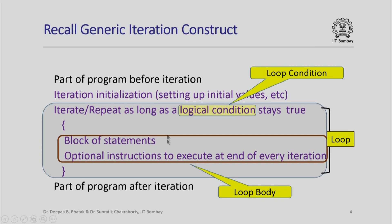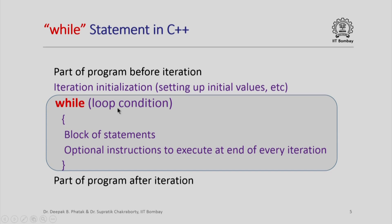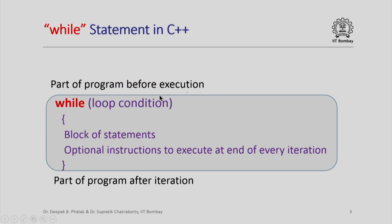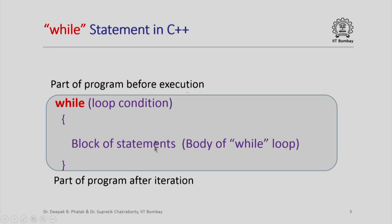In C++ we can implement this using the while construct as follows: while (loop condition) { block of statements }. The optional instructions to be executed at the end of every iteration can be grouped with this block of statements, and the initialization part can be grouped with the part of the program before the iteration. So we have a part of the program before the loop, the while loop body, and then the part of the program after the while loop.